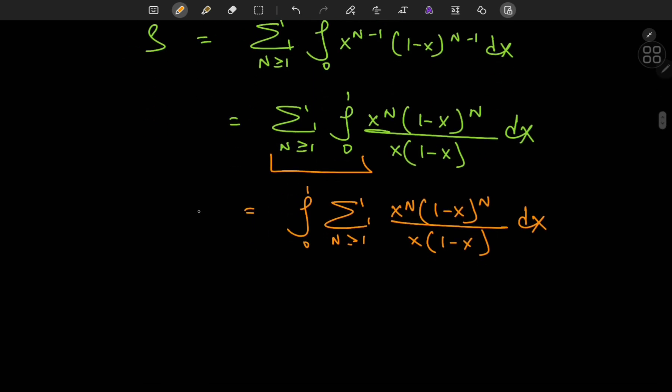Notice that the switch-up has made things very convenient and that this x times 1 minus x factor is independent of the index variable n so we can write it outside the sum.